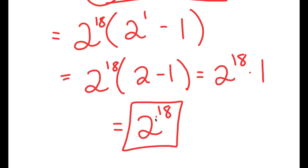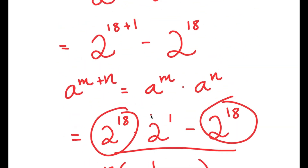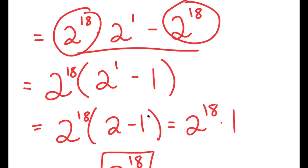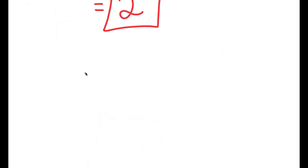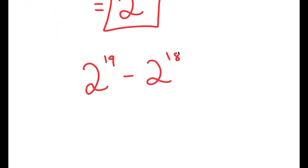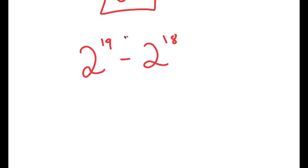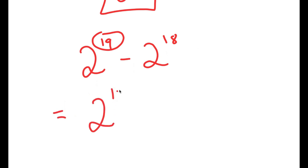Now, there is actually another method of solving this problem. Going back, our original problem was 2 to the power of 19 minus 2 to the power of 18. What we did was write 19 as 18 plus 1 and solved it by factoring out 2 to the power of 18. Now, what if instead of rewriting 19, I rewrite 2 to the power of 18 as 2 to the power of 19 minus 1?